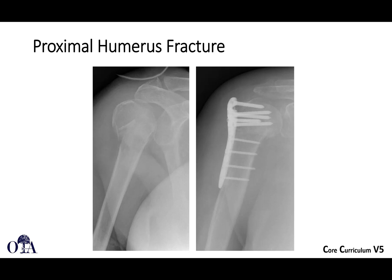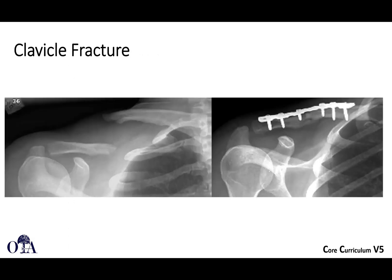Here's an example of a proximal humerus fracture fixed with a locking plate and screws. This is an example where the fixation has not held the reduction. Sometimes we can see screws that penetrate into the shoulder joint, so when fixing these we're trying to make sure we're not penetrating the joint surface. Here's a clavicle fracture with very wide displacement, risk for non-union, and risk for dysfunction — treated with open reduction internal fixation with plates and screws.